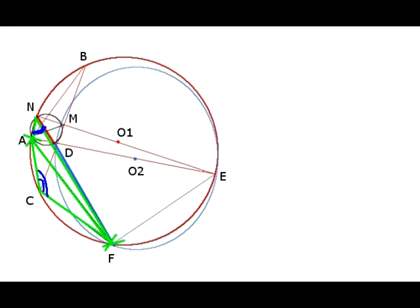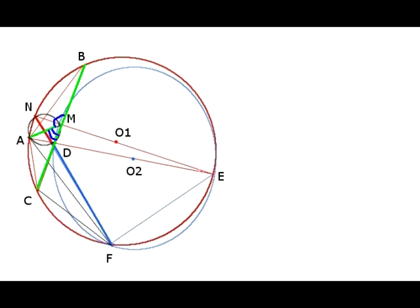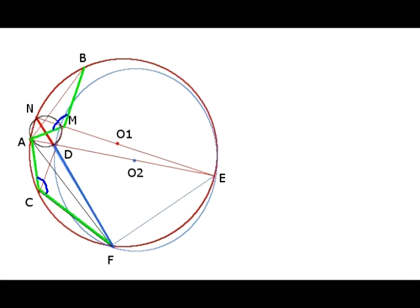One of these two angles, AND and angle ACF are supplementary, meaning that the sum is 180 degrees, because they subtend the major and minor arcs of chord AF, whose total is 360 degrees. The second angle, AMD and angle AMD are also supplementary, since they are adjacent. From the previously found equality, it follows that angle ACF is equal to angle AMB.